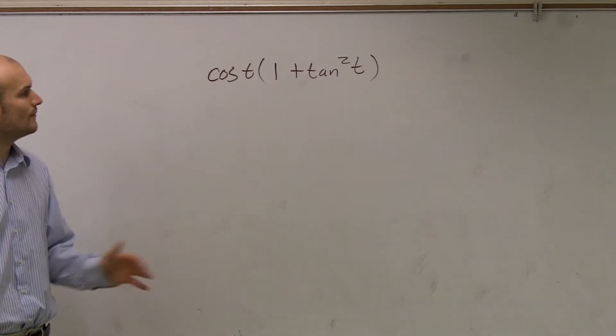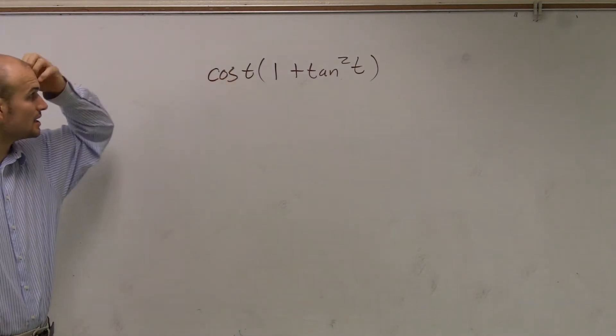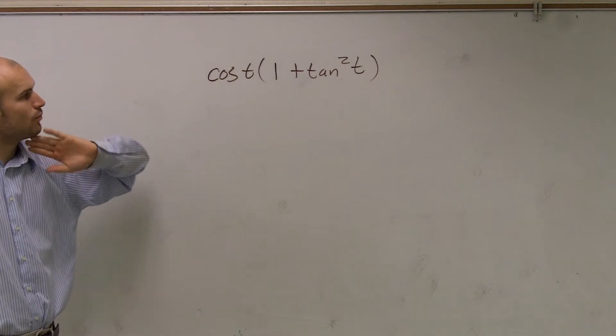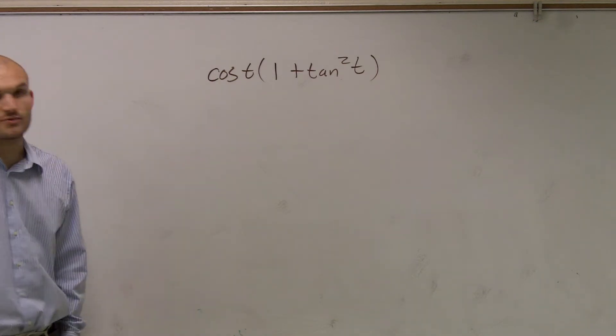All right, so looking at here, I have a cosine of t times 1 plus tangent squared of t.